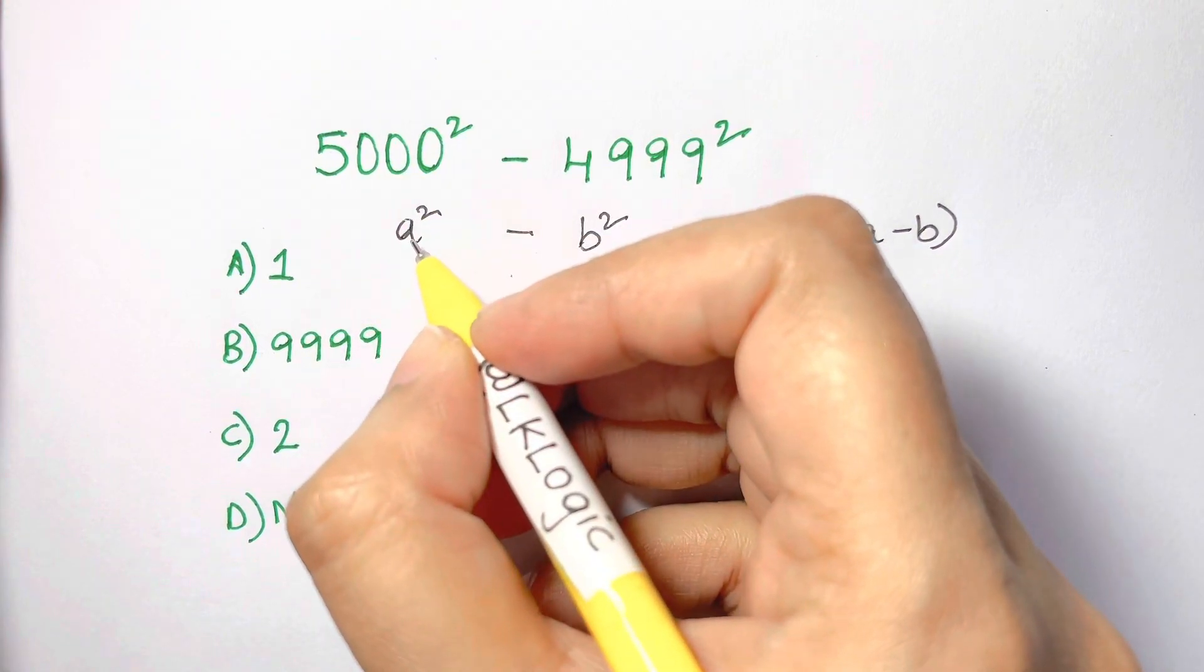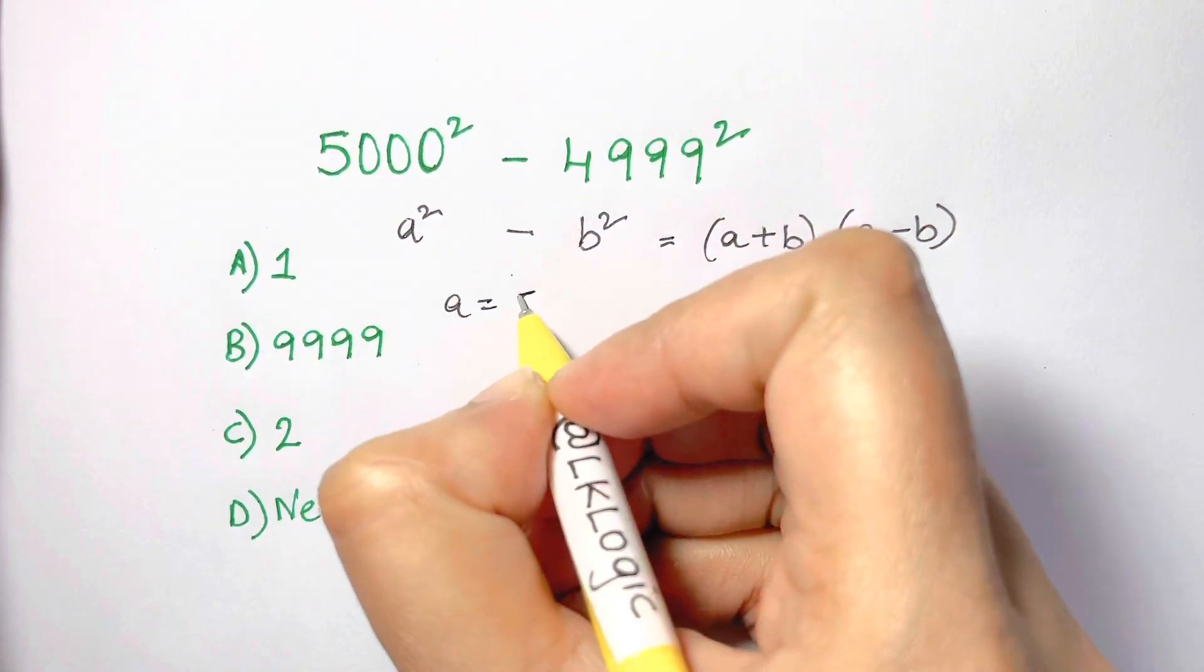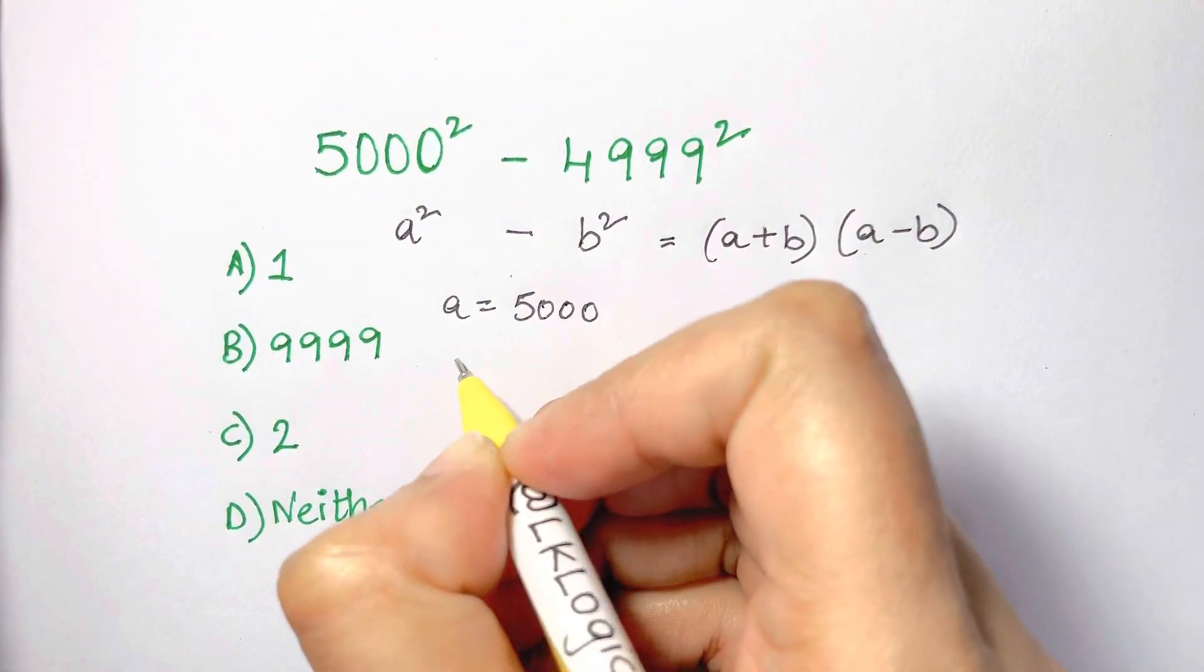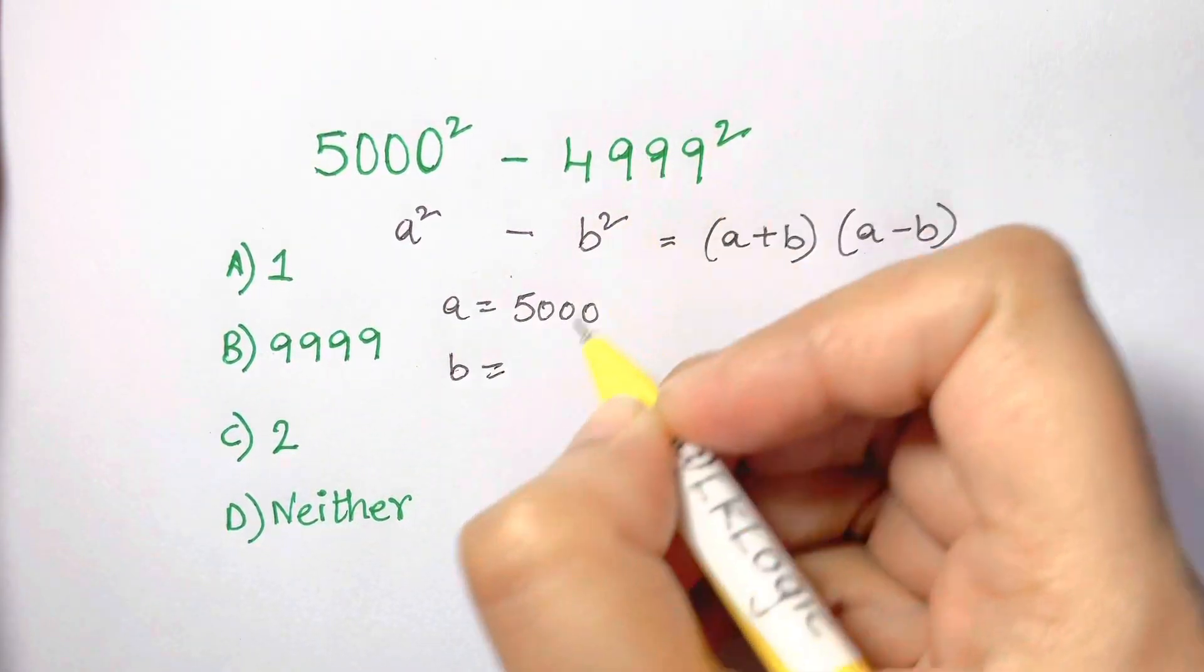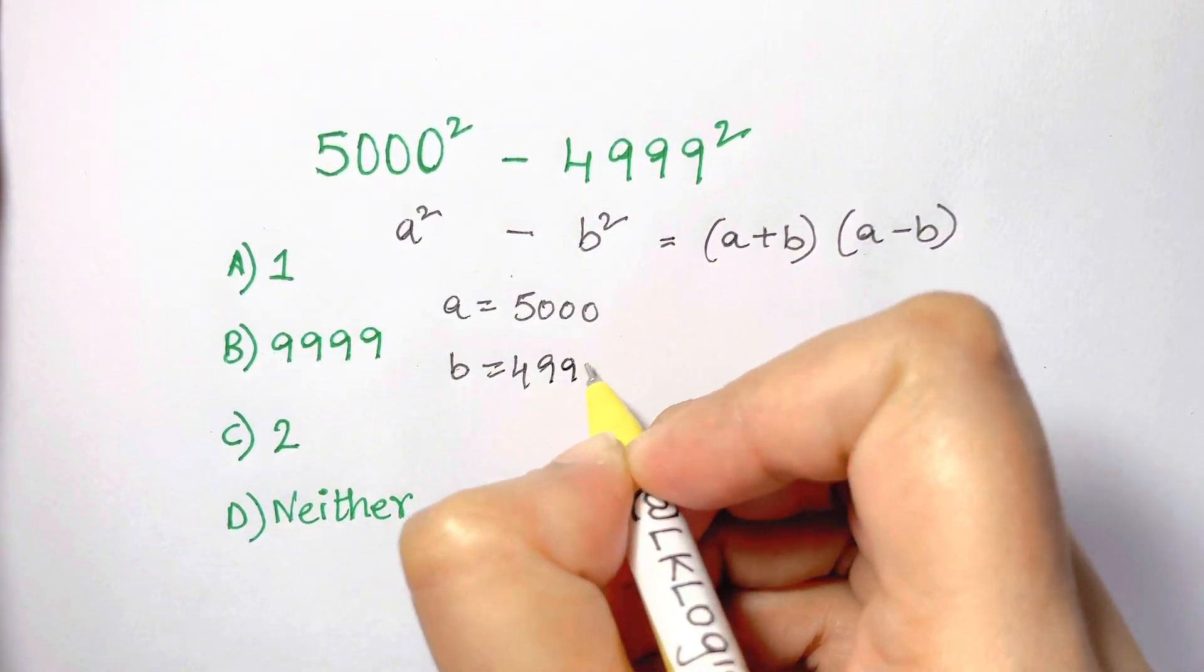What is a when you compare? a is 5000. And b is, when you compare from here, that's 4999.